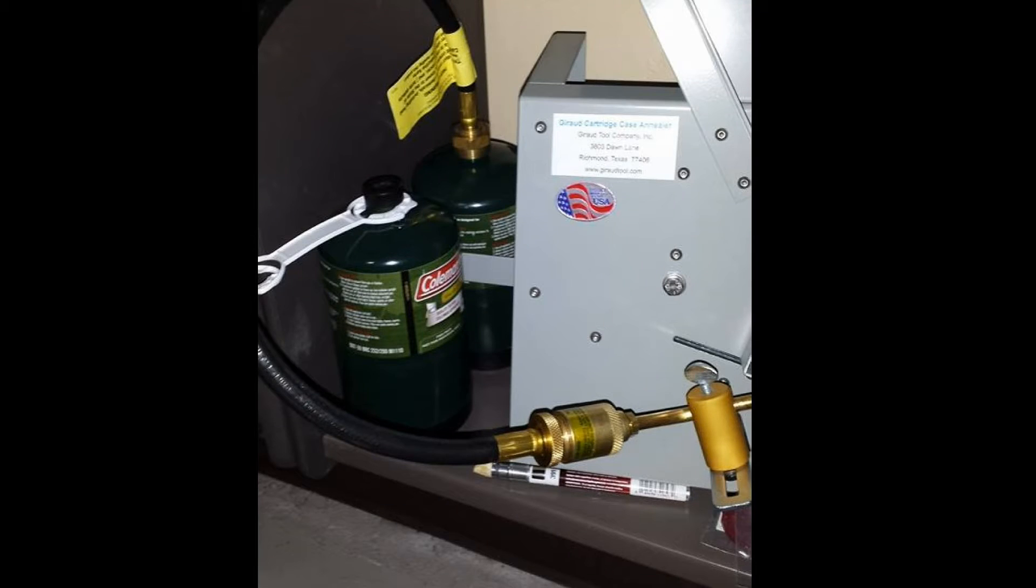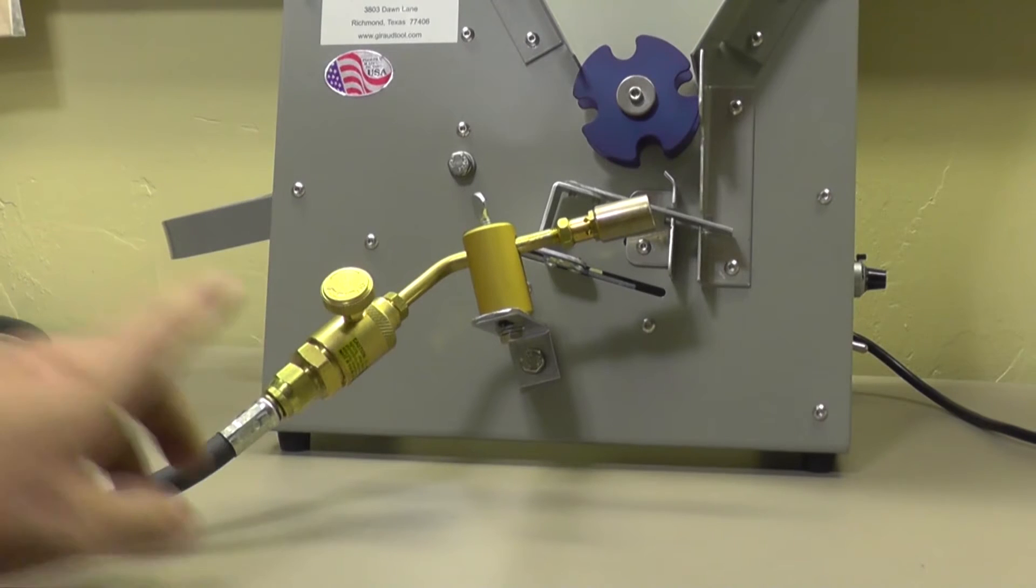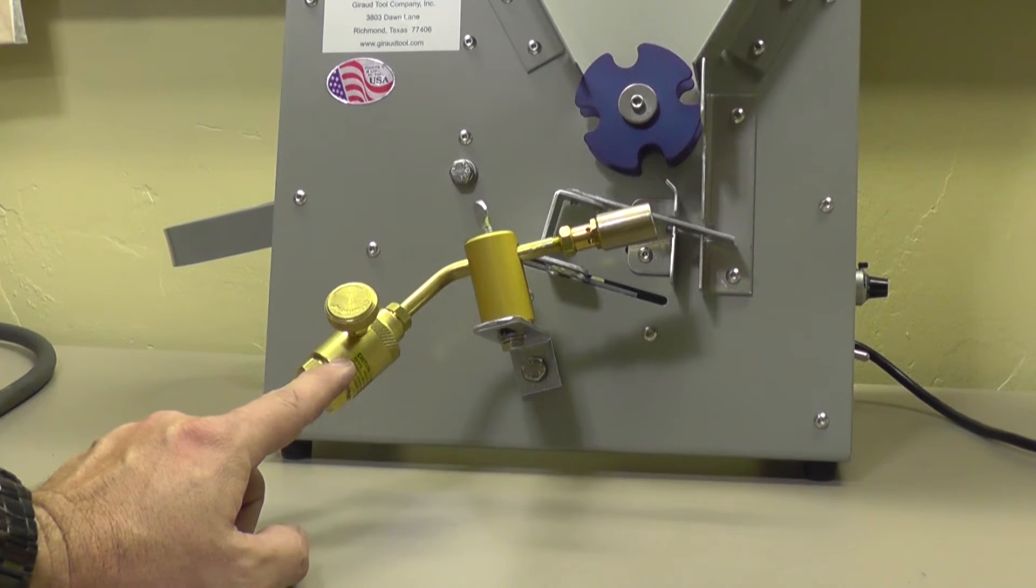This is the standard setup as it comes from Giroux. As you can see, it's set up to use the small propane tanks, which is fine, but the problem with this setup is that this torch valve is very sensitive, and the slightest adjustment on this valve will take you from a small flame to a very large flame,